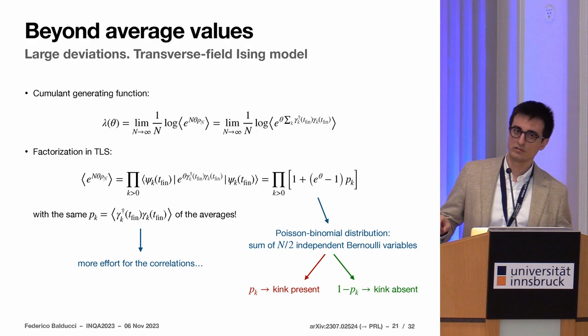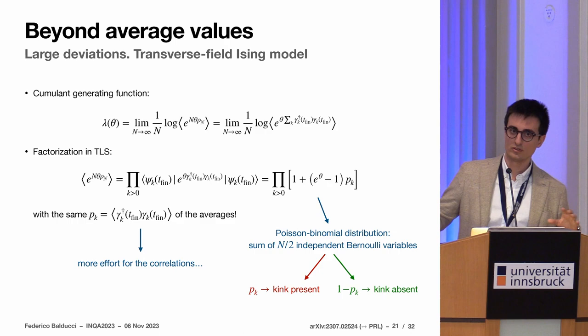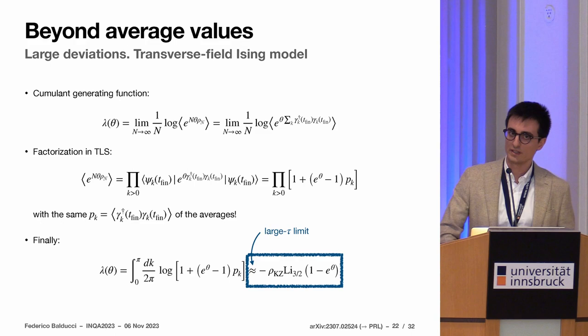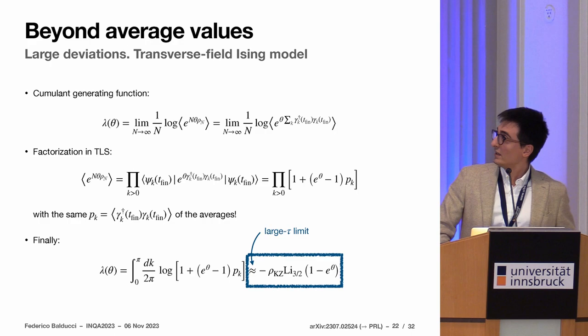You can really here assign an interpretation to where the sum of independent trials comes from. It comes from the decomposition into modes. If you go instead to a real space representation, you can really think of it as defects forming at a certain distance, so they are causally disconnected. In this case, there is more of an interpretation of why one should find independent defects in the model.